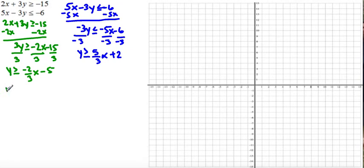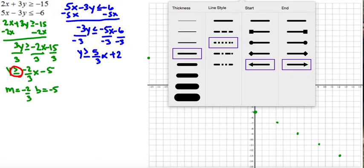I'm going to graph my first inequality. The slope is negative 2/3 and the y-intercept is negative 5. I start at negative 5 on the y-axis, then go down 2, right 3. To extend it, I go up 2, left 3. Since the inequality symbol is greater than or equal to, my line is solid, so the line is included in the solution.